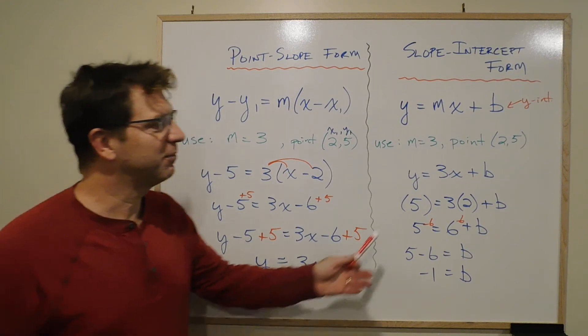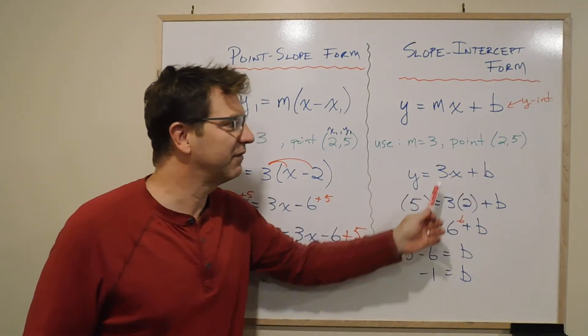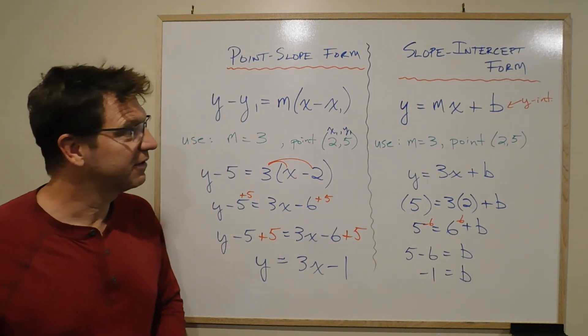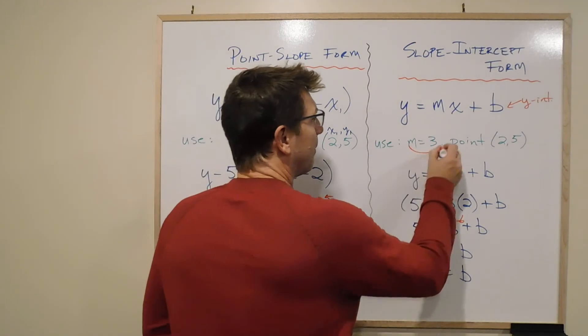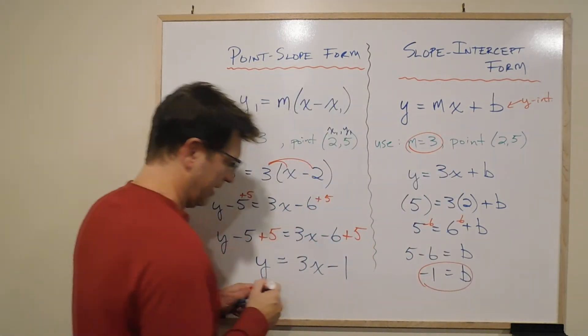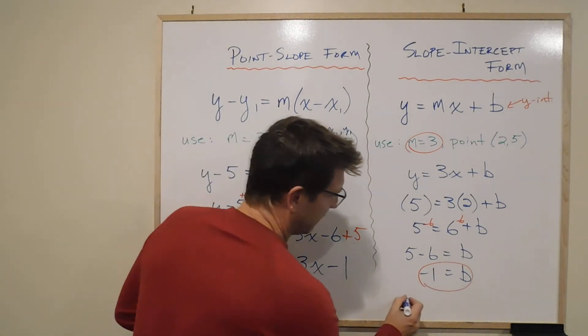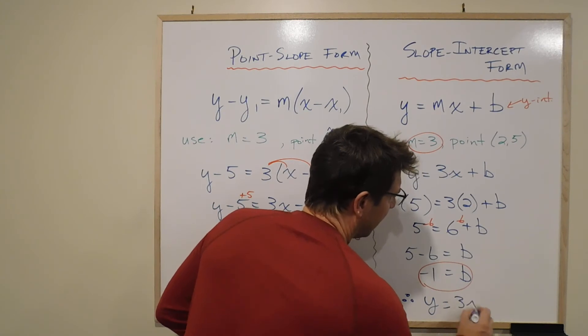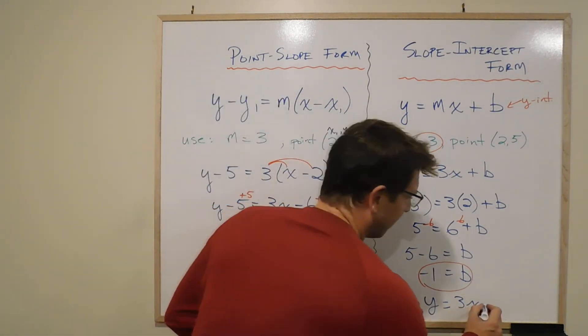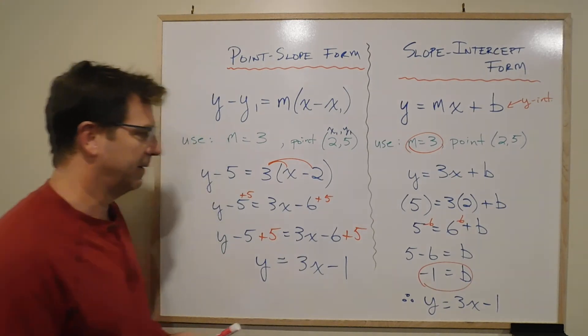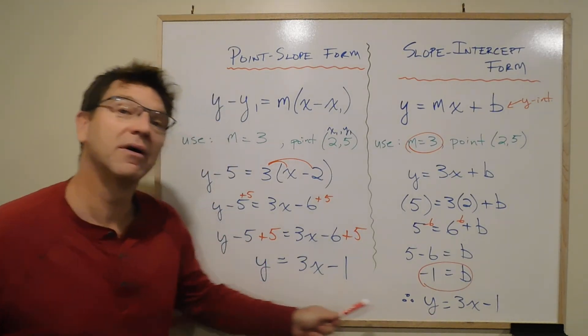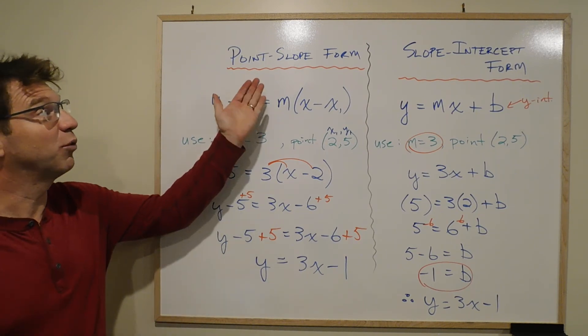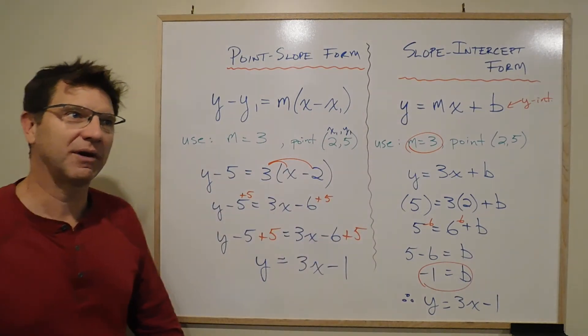So when I do it with this technique of putting the point 2, 5 directly into x and y, what I end up getting is the b. So now what I have is I have the slope, and I have the b, and then I just have to put it together and say therefore y equals slope is 3x plus b, but b is negative 1, so you put negative 1. And, of course, the answers are the same, just two different ways of getting to the exact same answer using point-slope form or using the slope-intercept form, okay?